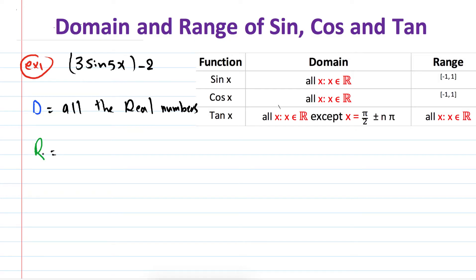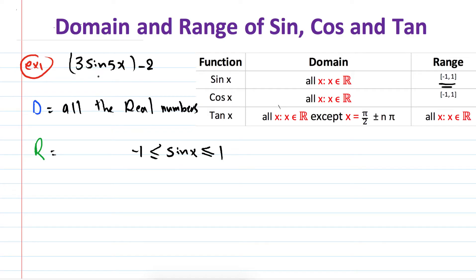Let's find the range using inequalities. We know that the range of sine(x) satisfies: -1 ≤ sine(x) ≤ 1. What we're going to do is convert the expression inside this inequality to look like 3 sine(5x) - 2.